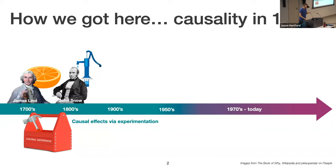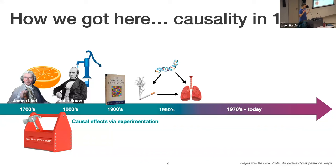The role of experimentation was central to causal inference, and it was formalized in the early 1900s by Ronald Fisher in his book 'The Design of Experiments.' This was the way you understood the world: if you wanted to do science, you ran experiments.